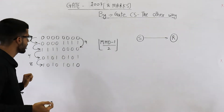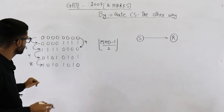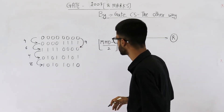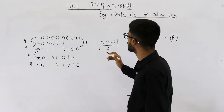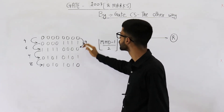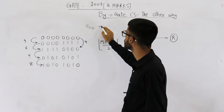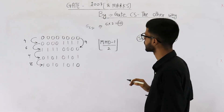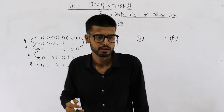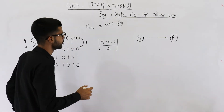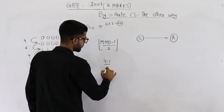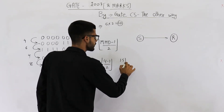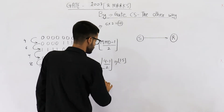Do we have a Hamming distance less than 4? No, I don't think so. You need to analyze each and every pair — with 5 code words, you have 5C2 = 10 pairs to analyze. I'm telling you it will be 4 only. So (4 − 1) / 2 floor value = 3/2 = 1.5, floor value of which is equal to 1.